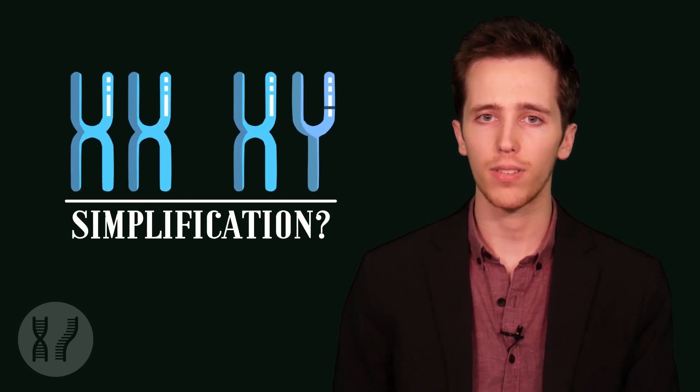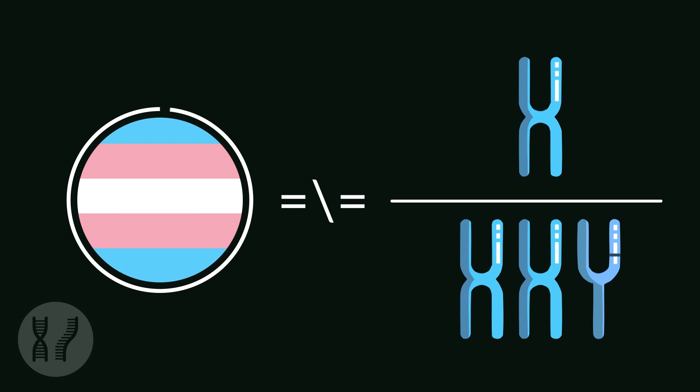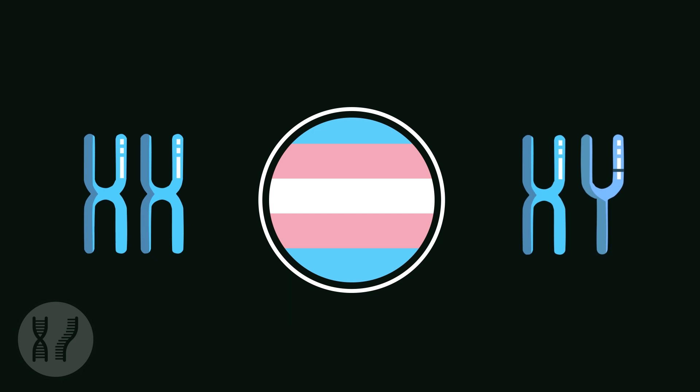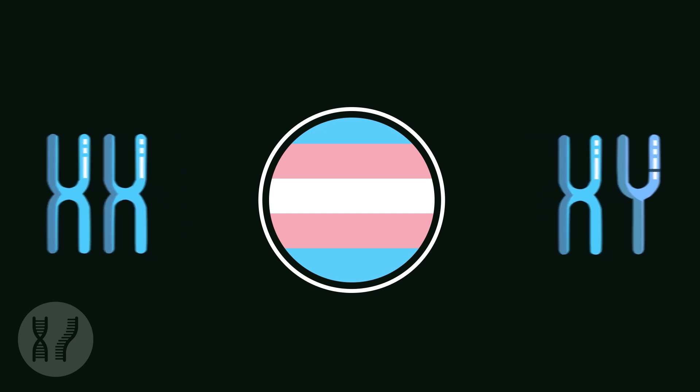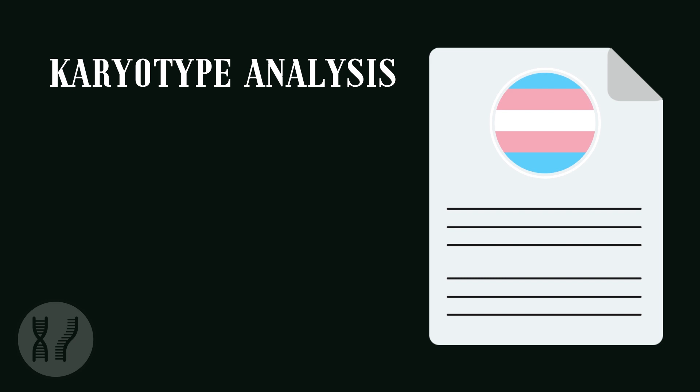But even with the existence of other chromosomal arrangements, is the XX and XY model a simplification? First, atypical karyotypes like X or XXY are unrelated to trans identities, since trans individuals almost always have typical XX or XY karyotypes.